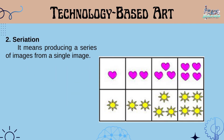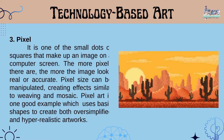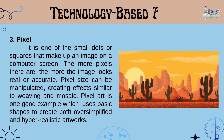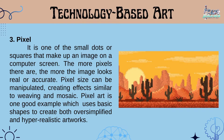Number 2, Seriation. It means producing a series of images from a single image. Number 3, Pixel. It is one of the small dots or squares that make up an image on a computer screen. The more pixels, the more the image looks real or accurate. Pixel size can be manipulated, creating effects similar to weaving and mosaic.